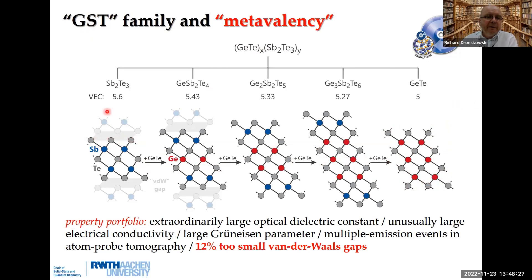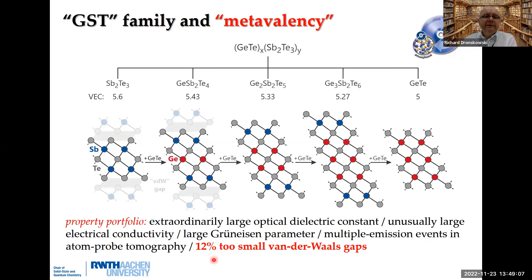You can mix Sb2Te3 with GeTe to get phases such as GeSbTe4, Ge2Sb2Te5, and so forth — the physicists call this GST. All of them have structures resembling rocksalt, octahedrally coordinated with a little distortion. These materials have an interesting property portfolio: large optical dielectric constant, relatively large electrical conductivity, large Grüneisen parameter, and some weird behavior in atom probe tomography. For example, the Van der Waals gap is far too small — at 12% — without external pressure. This has been dubbed metavalent bonding as a new kind of chemical bonding. But this is clearly incorrect — metavalency is not a new kind of chemical bonding.